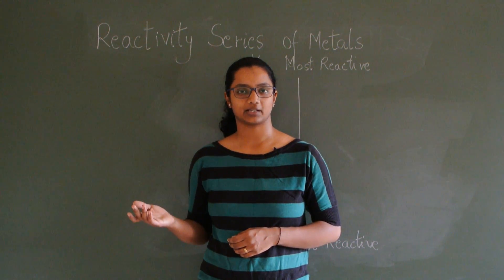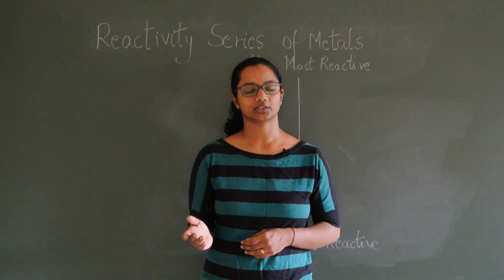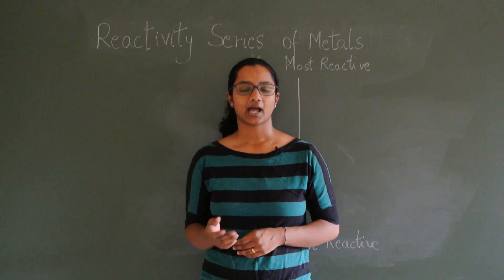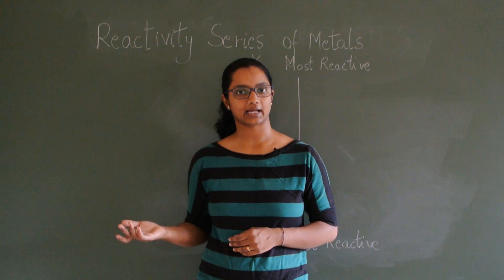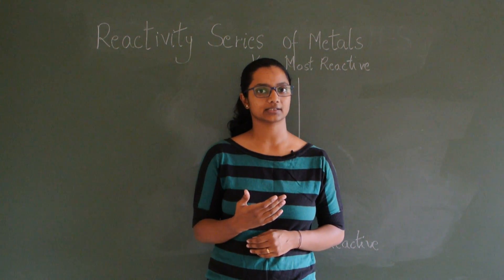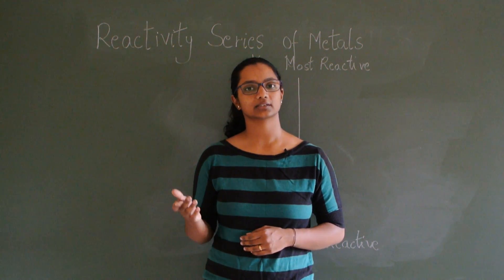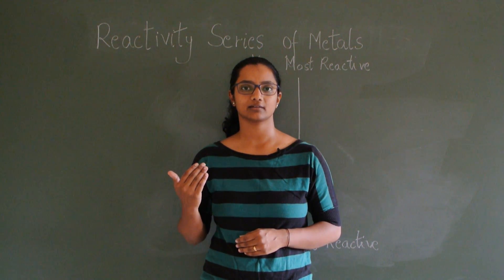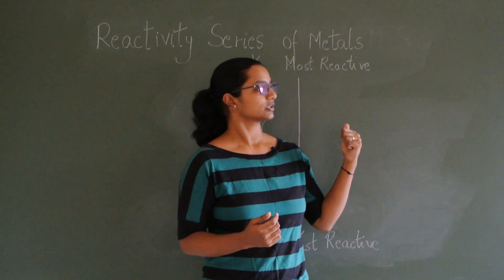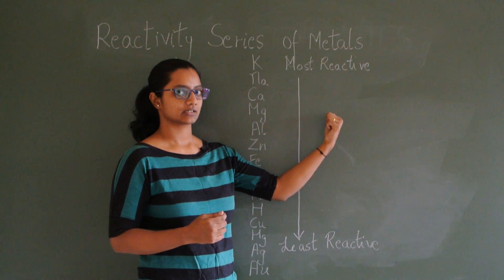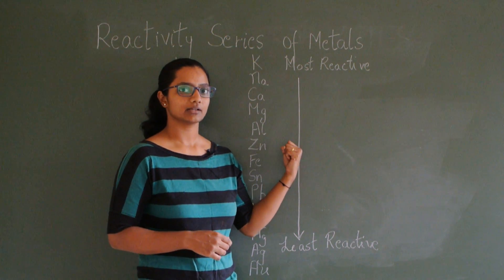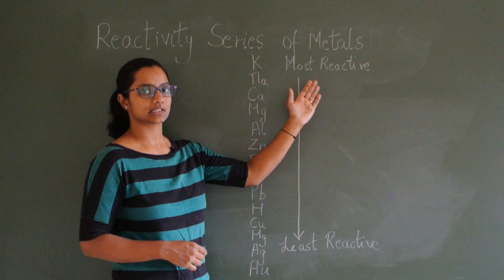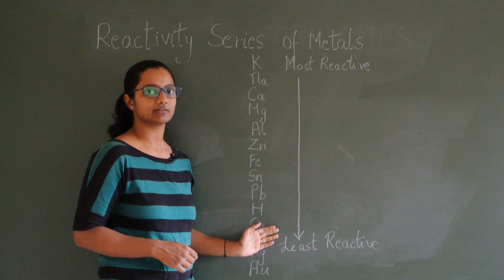The rate of reaction of metal with oxygen, water, and acid is different for different metals, and the rate of reaction depends on its reactivity. There are some metals that react more quickly than others, and this can be arranged in the decreasing order of their reactivity, which is called the reactivity series of metals. This reactivity series has to be considered to understand whether a metal reacts more quickly than another in comparison.